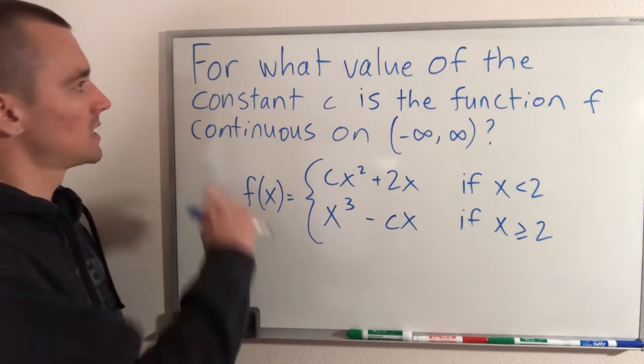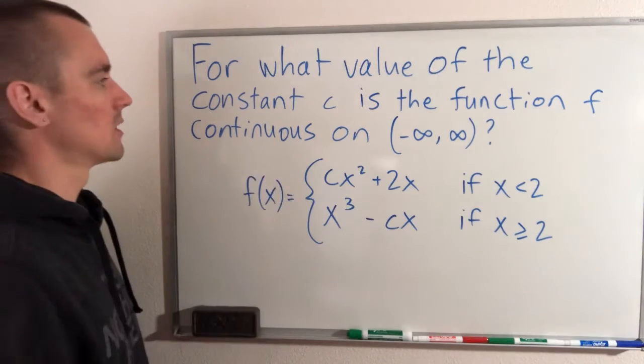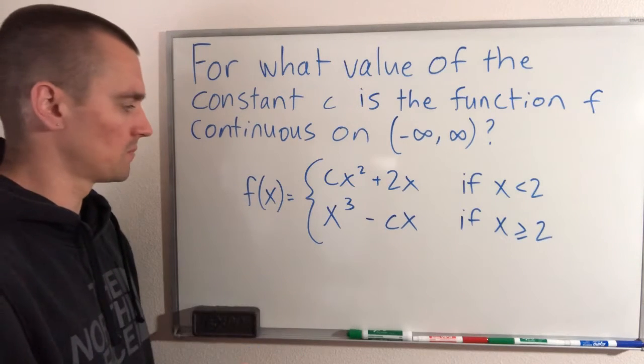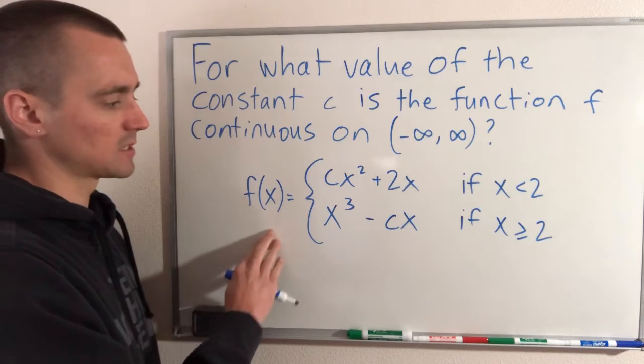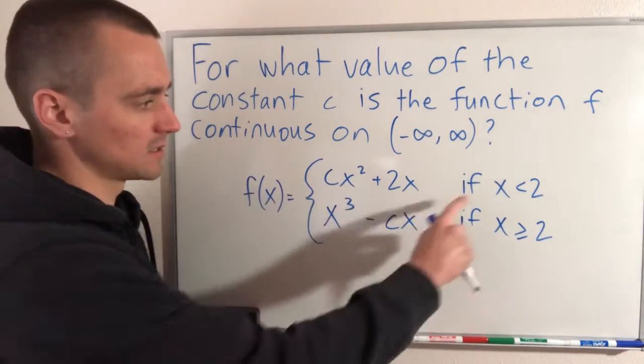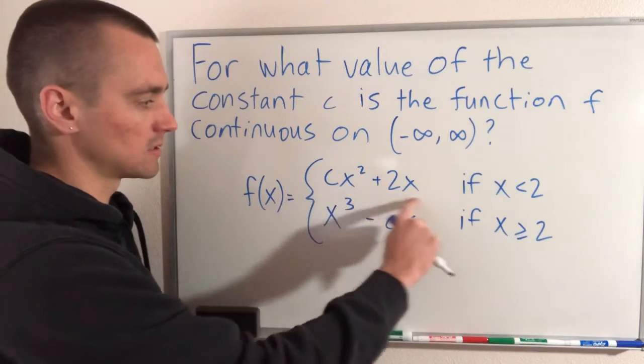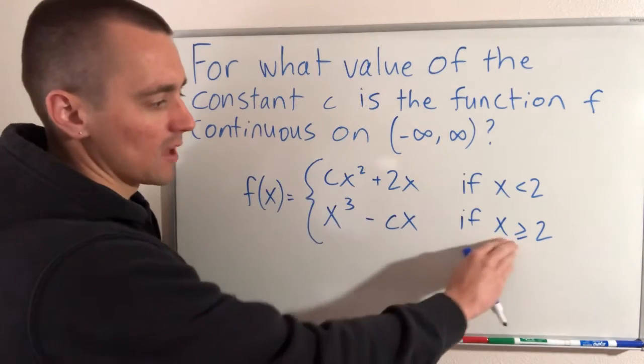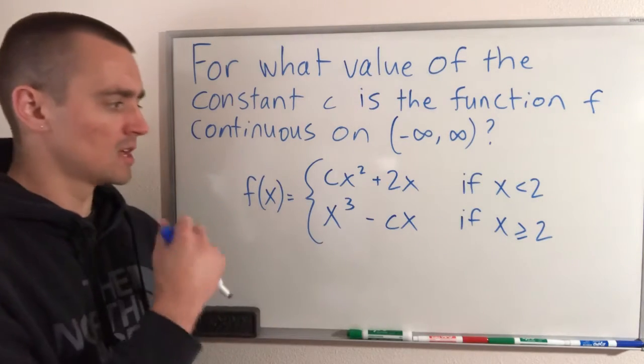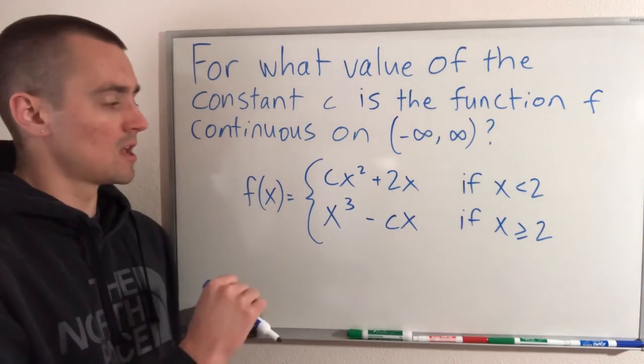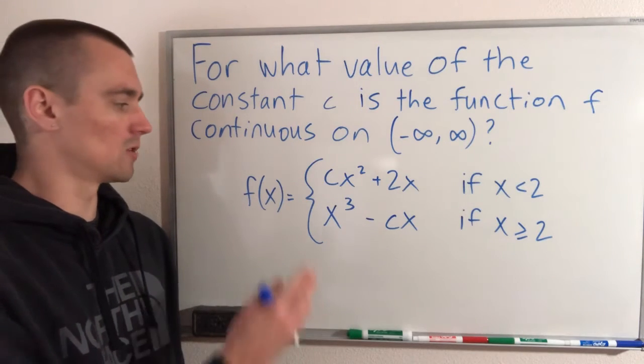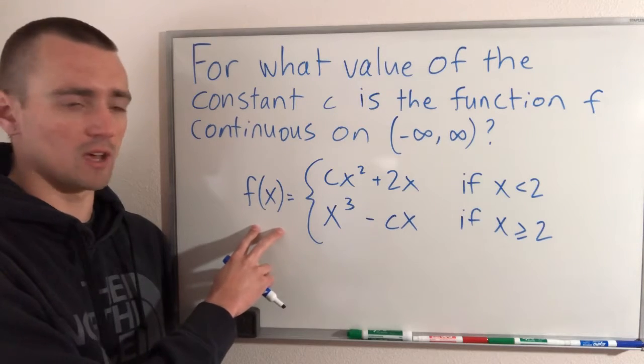The problem we're going to be doing today is: for what value of the constant c is the function f continuous on negative infinity to infinity, where we have f(x) defined by this piecewise function here. So all this says is if x is less than 2, we're going to say that f is this function here. And for all x greater than or equal to 2, we would use this function for f. So this is just a piecewise function. Basically just means that we have these two pieces that we're dealing with that combine to make up our function f(x).